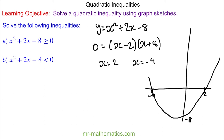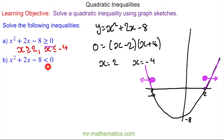For part a, we're looking at the points greater than or equal to zero, which are here and here. So x is greater than or equal to two, and x is less than or equal to negative four. For part b, we're looking at points less than zero, which are in green. You can see that x is less than two but greater than negative four.